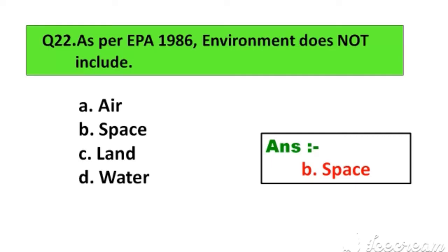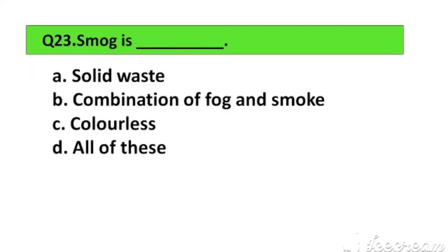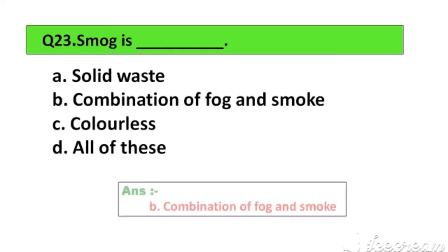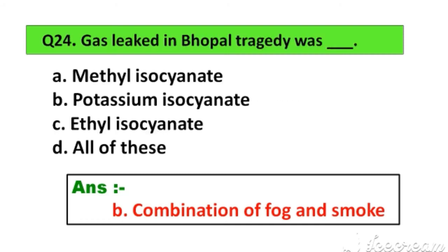Question number 23. Smog is: Option A. Solid waste, B. Combination of fog and smoke, C. Colorless, D. All of these. The right answer is Option B. Combination of fog and smoke.